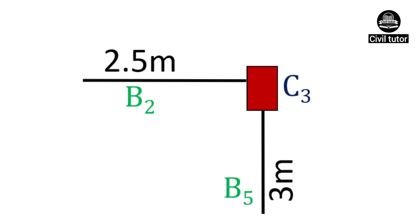For column 3, the major axes of bending will be along B5, therefore, its depth will be kept perpendicular to B5.